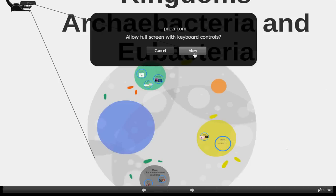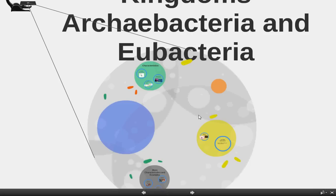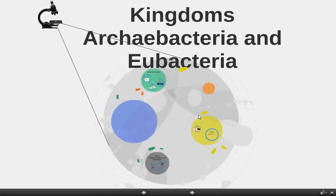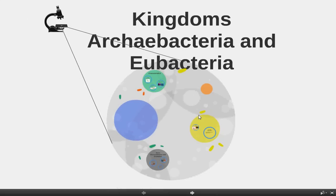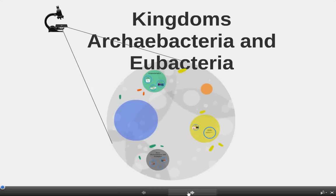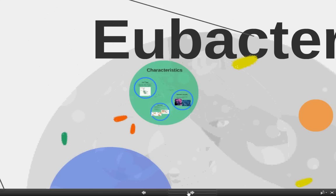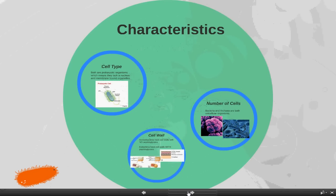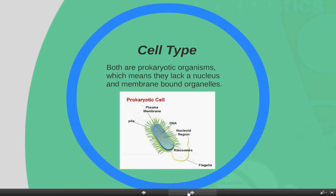So this is about Kingdoms Archaeobacteria and Eubacteria. First, characteristics-wise: both of these kingdoms are prokaryotic organisms. That means that they lack a nucleus and they don't have membrane-bound organelles. That's what prokaryotes are — we talked about them when we talked about bacterial diseases earlier this year.